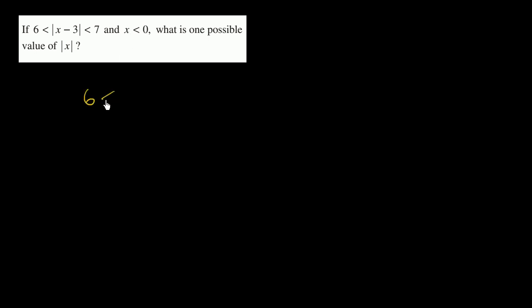So let's just rewrite this first compound inequality, and then we'll think about the constraint of x being less than 0. They're telling us that 6 is less than the absolute value of x minus 3, which is less than 7. So let's think about what it means to take the absolute value — it can be viewed as how far a number is from 0.